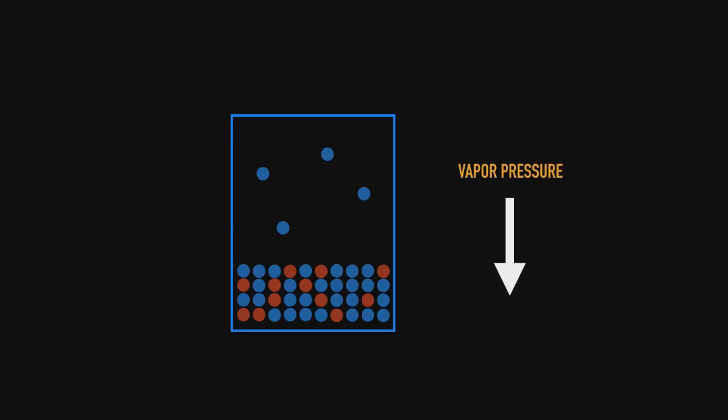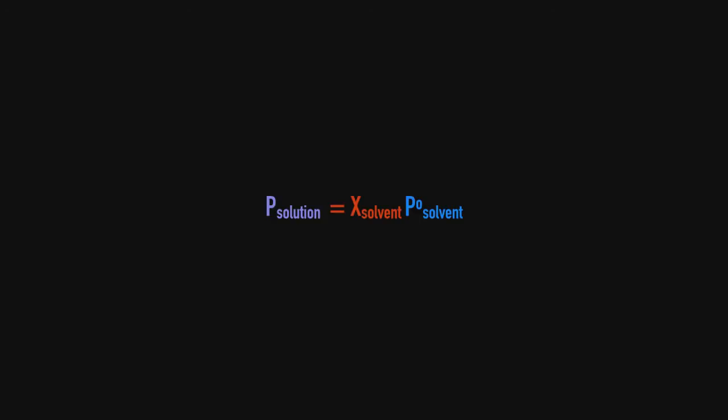Raoult summarized what's going on here with an equation. He basically said that the pressure of the solution equals the mole fraction of the solvent times the pure component of the solvent.